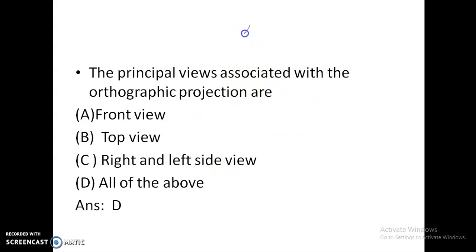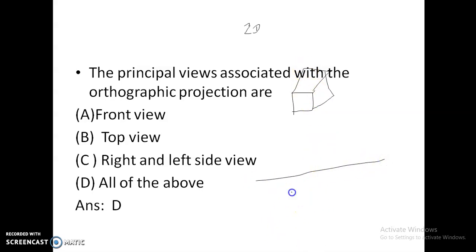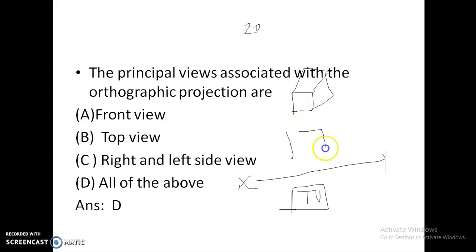In orthographic projection, it is a 2D diagram. For an object — for example, a cube, which is a 3D object — we draw the top view. The top view should be placed below the XY line, and the front view should be drawn above the XY line.